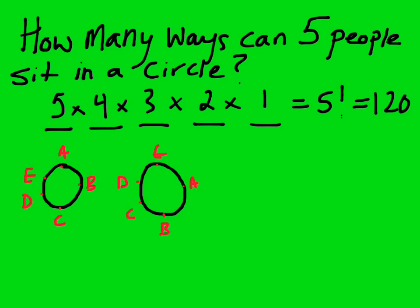So you sort of get the idea that these arrangements are kind of the same. They appear to be different, but the relative position of the people haven't changed. So A is sitting next to B, and A is sitting next to E. It's the same thing over here. A is sitting next to E, and A is sitting next to B.